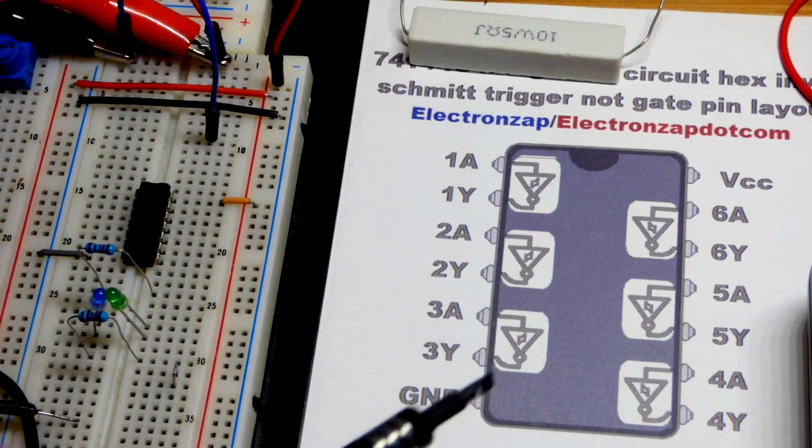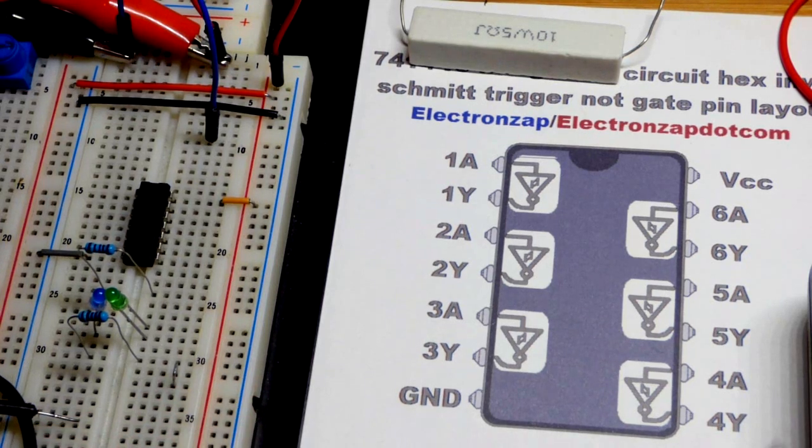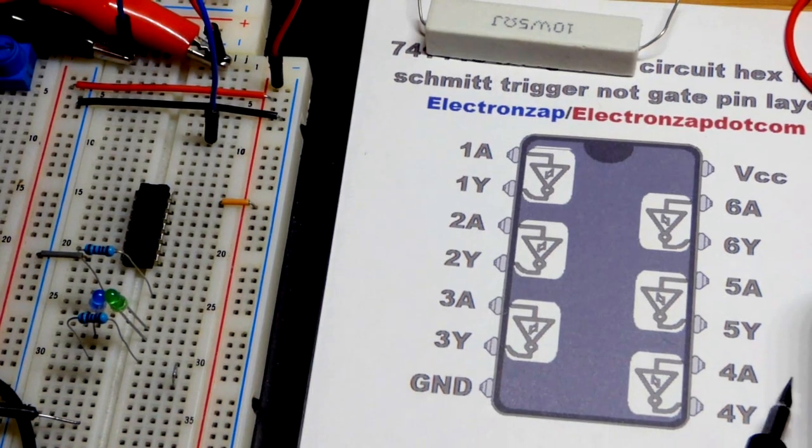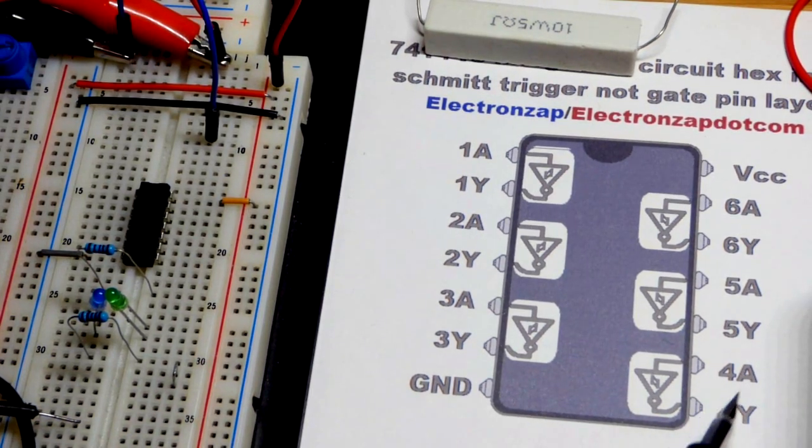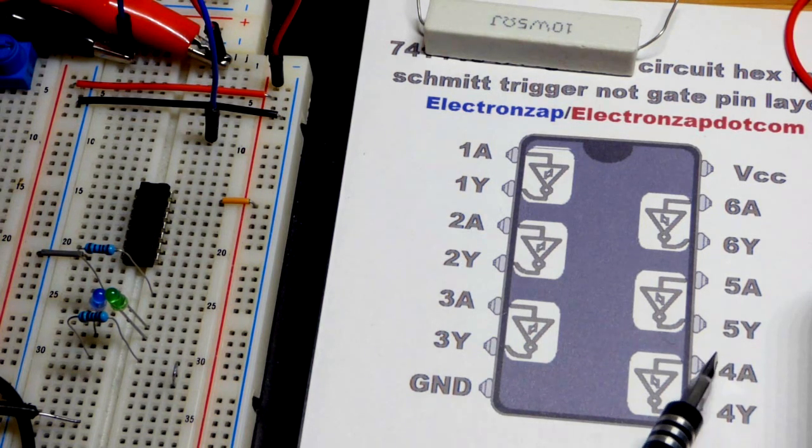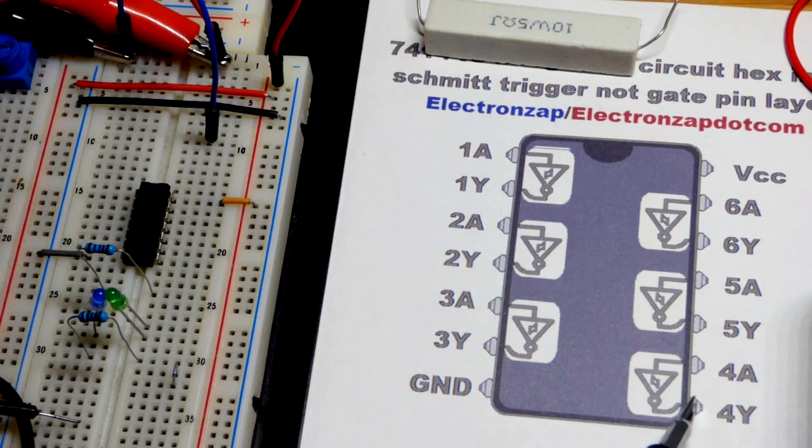Inverters are NOT gates. They take the input signal and invert it at the output. So if you give a high input to any of these, input is A there, then it will output the opposite - you'll get a low output. Give a low input, you'll get a high output. And they're independent of each other.